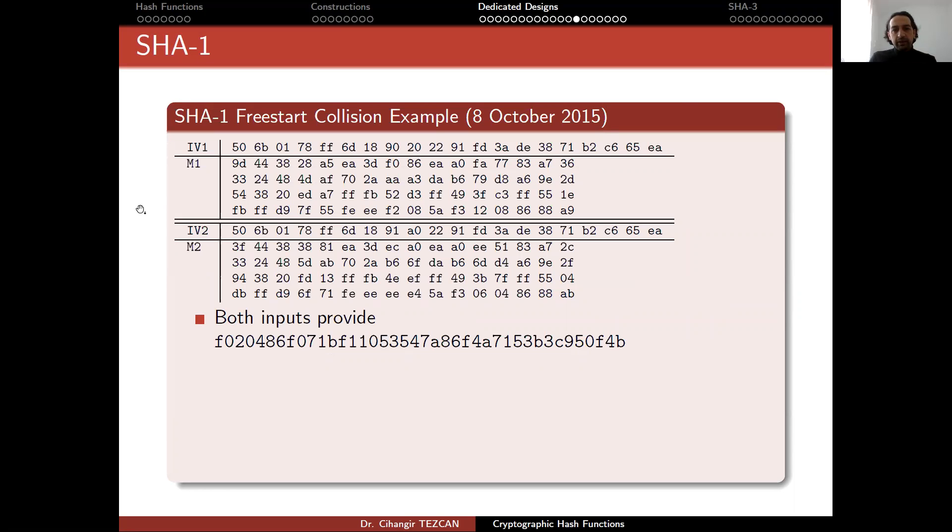A free-start collision example was found. We said free-start because, as you can see, the IVs are different in these two cases. But if you are going to use a standard like NIST, then you wouldn't change the IV. In this case, the attacker modifies the IV in order to find the collision in a faster way. It was shown that this message block, a single message block with this IV, and this message block with this IV, provides the same SHA-1 output.